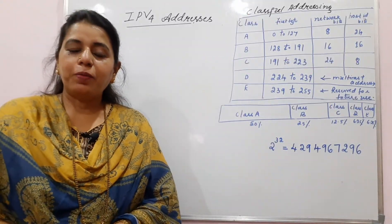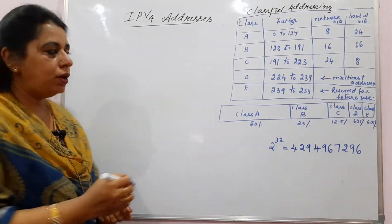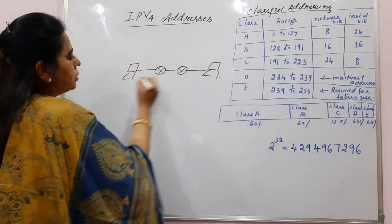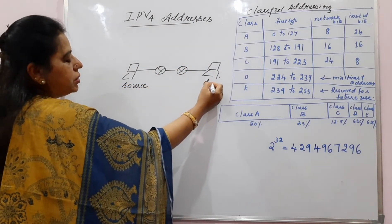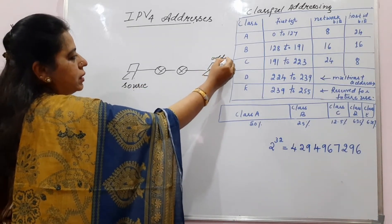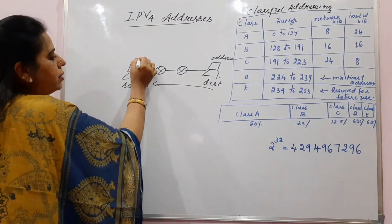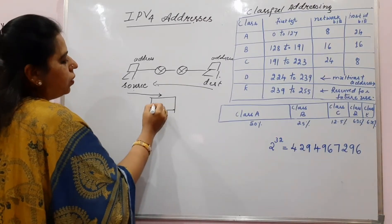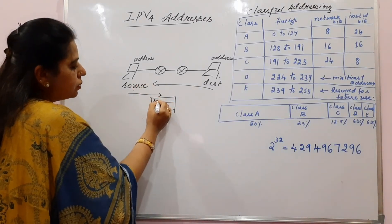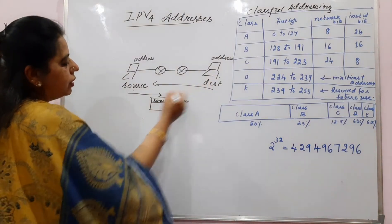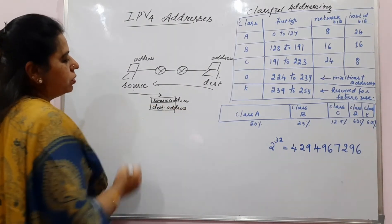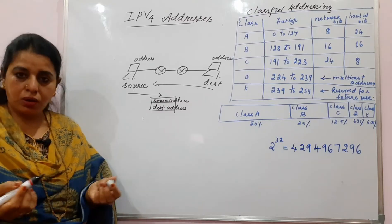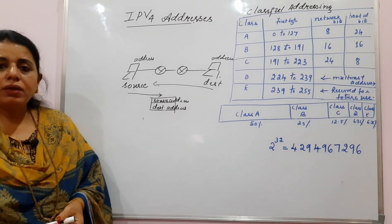Hello friends, welcome to my channel. A source host wants to send a packet to the destination host. The source has to know the address of the destination, and if the destination has to reply, it has to know the address of the source. So whenever a packet is sent from the source, the packet always includes two addresses: the source address and the destination address. Without these two addresses mentioned in the packet, it is not possible to have communication at all.